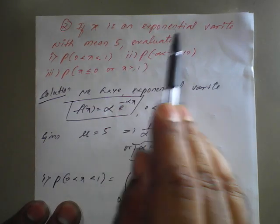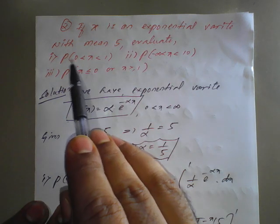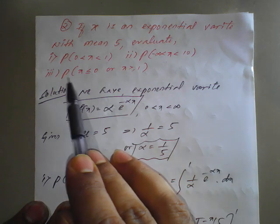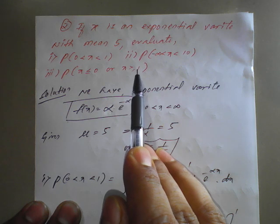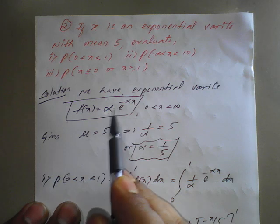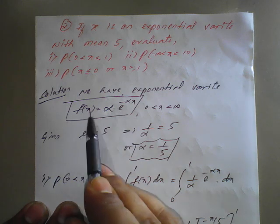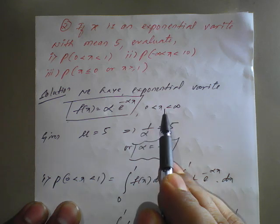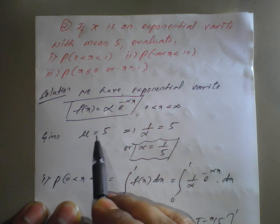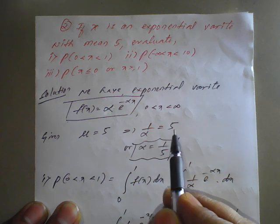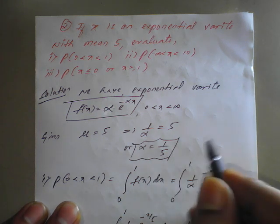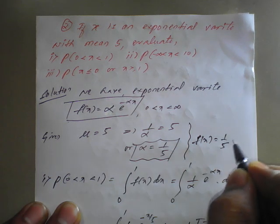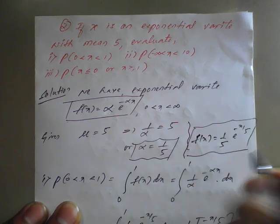Second question: if x is an exponential variate with mean φ, evaluate — first, P(0 < X < 1); second, P(minus infinity < X < 10); third, P(X < 0 or X ≥ 1). The exponential distribution is f(x) equal to alpha e^(minus alpha x) for x positive. Since mean equals 1 upon alpha equals φ, we get alpha equal to 1 upon φ, so f(x) equals (1/φ) e^(minus x/φ).